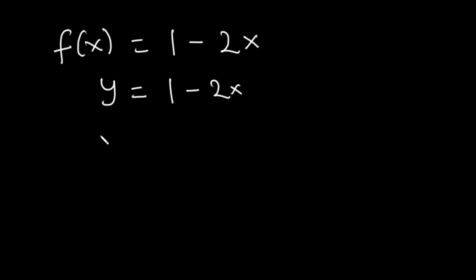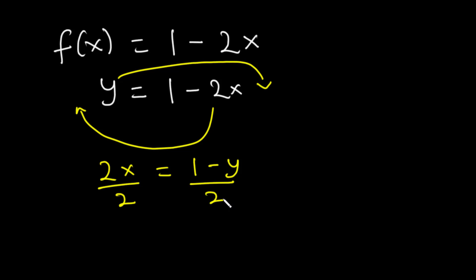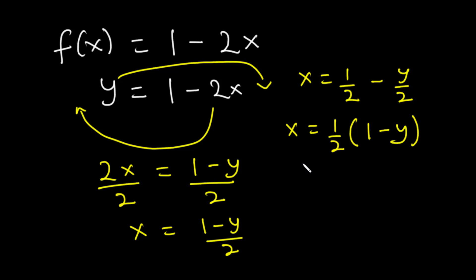Next is to make x the subject. We need to transpose negative 2x to the left-hand side and y to the right-hand side, so it's going to be 2x is equal to 1 minus y. Then we divide both sides by 2, and we have x is equal to 1 minus y over 2, which can be written as x is equal to 1 over 2 times bracket 1 minus y. Since any value of y will make the function defined, the range is the set of all real numbers.